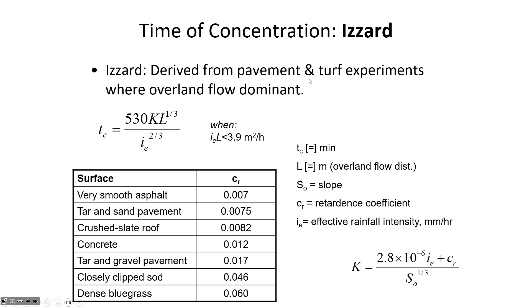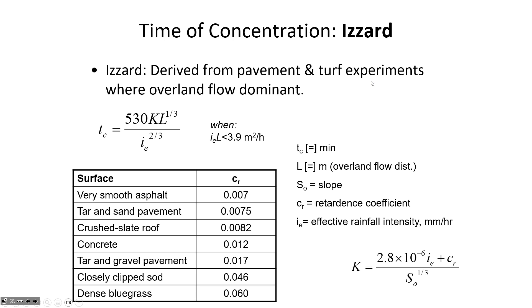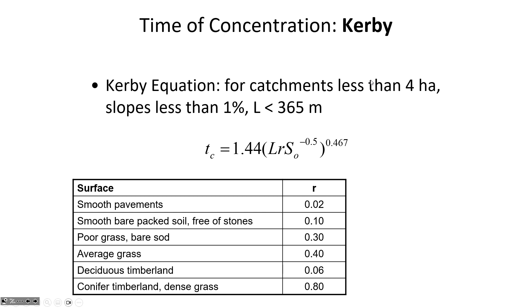The Izzard method was derived from pavement and turf where overland flow dominates, so it's suited to large grassy fields — different from Kirpich which was for natural basins. The Kirby equation extends to lengths up to 365 meters for catchments less than 4 hectares with slopes less than 1%. It accounts for slope, a roughness factor, and travel distance, but not rainfall intensity. Slopes less than 1% make it mainly applicable in developed areas, not natural West Virginia watersheds.